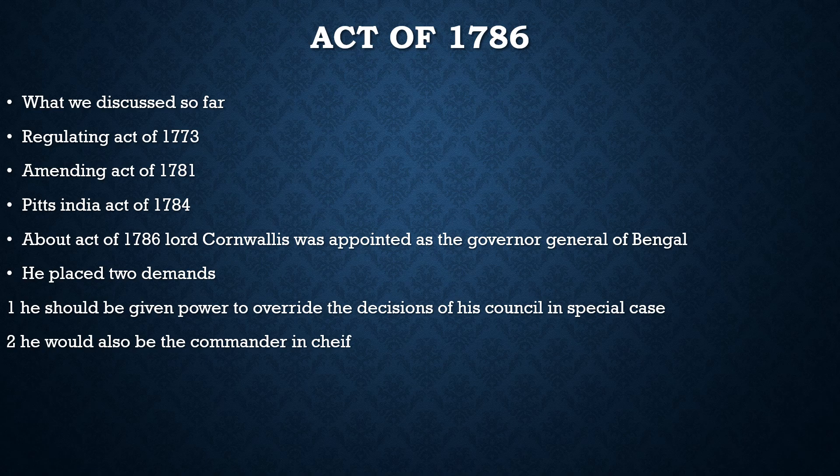The Amending Act of 1781 also provided that Hindus would be tried under Hindu law and Muslims under Muslim law. Then came Pitt's India Act of 1784, introduced by Prime Minister William Pitt, which distinguished between the commercial and political functions of the Company. It created a new body called the Board of Control to manage political affairs while the Court of Directors managed commercial affairs, establishing a system of double government in India.